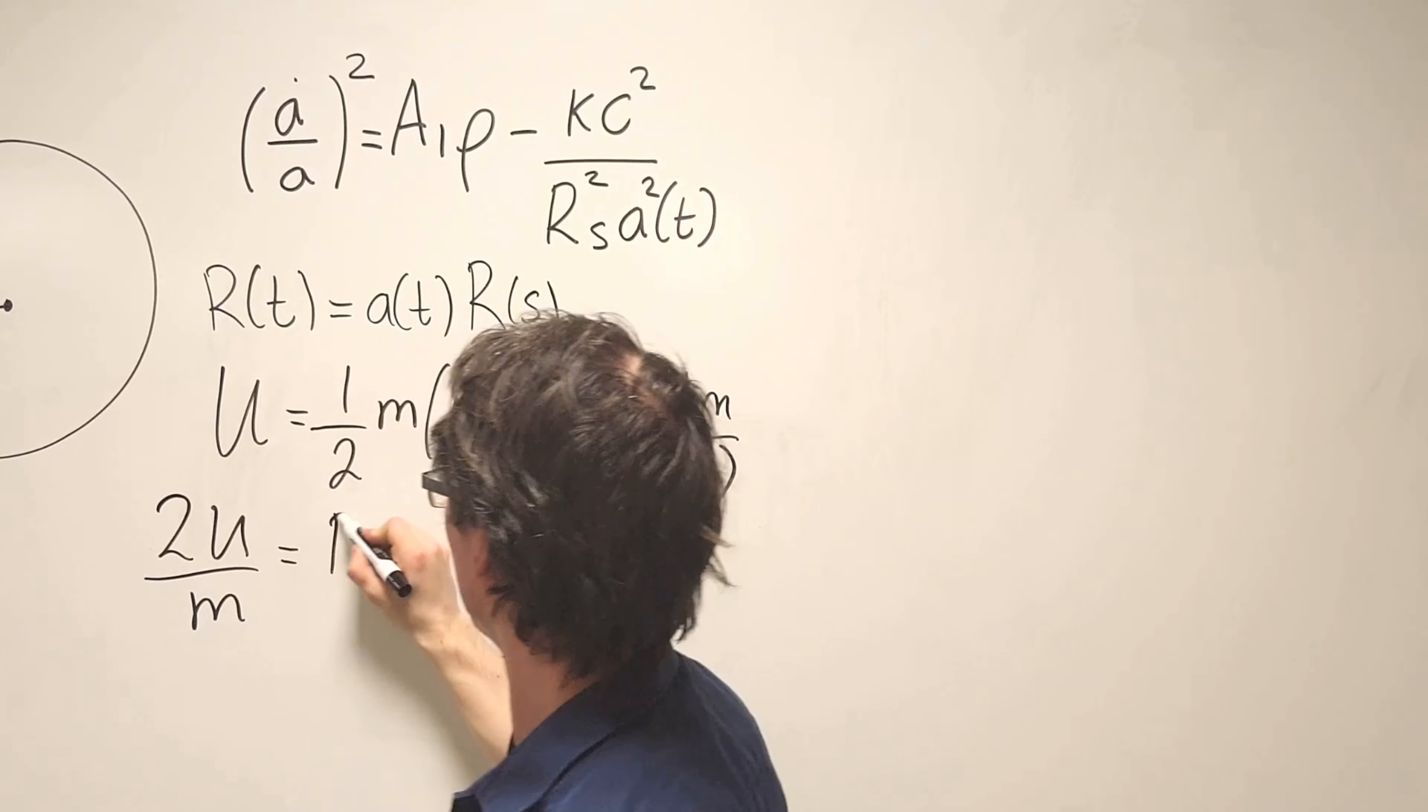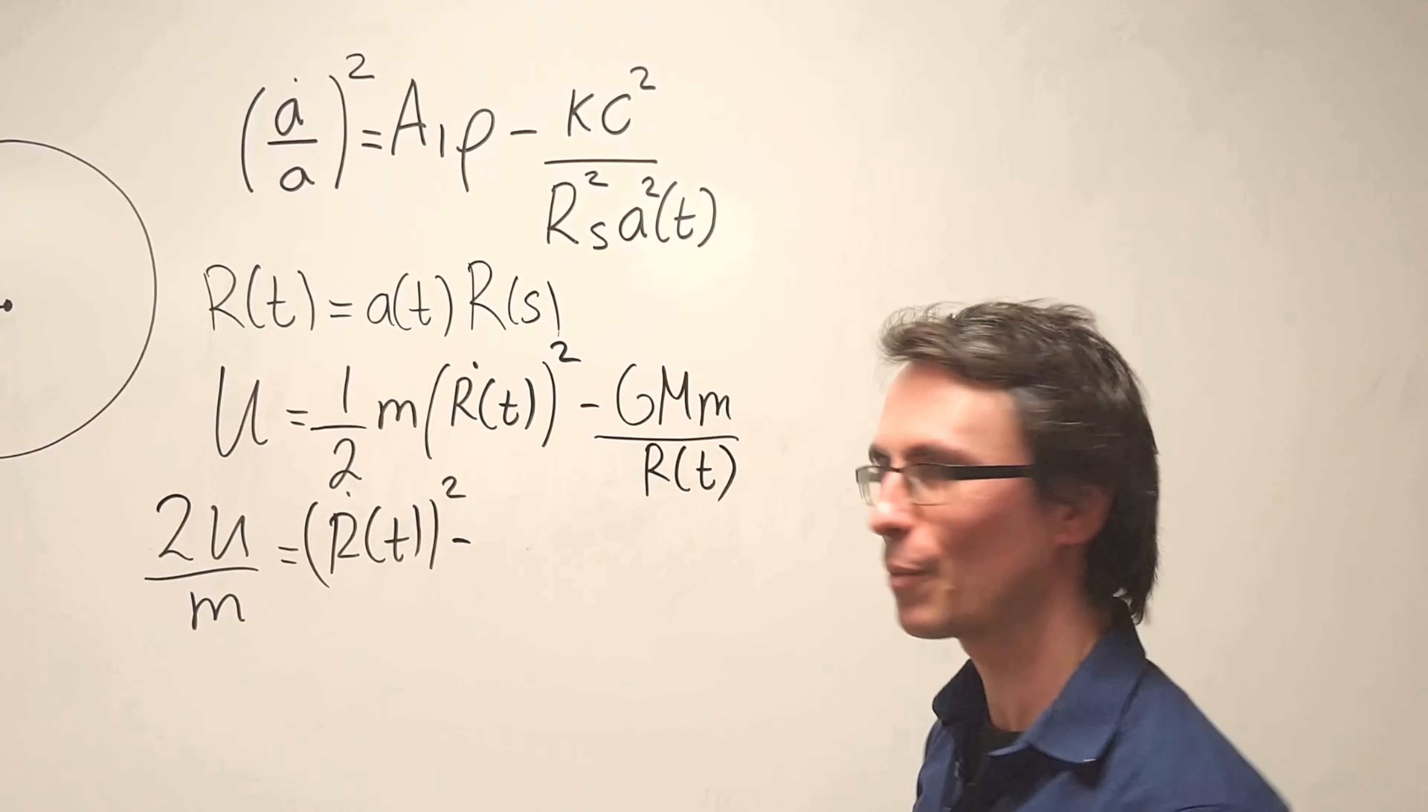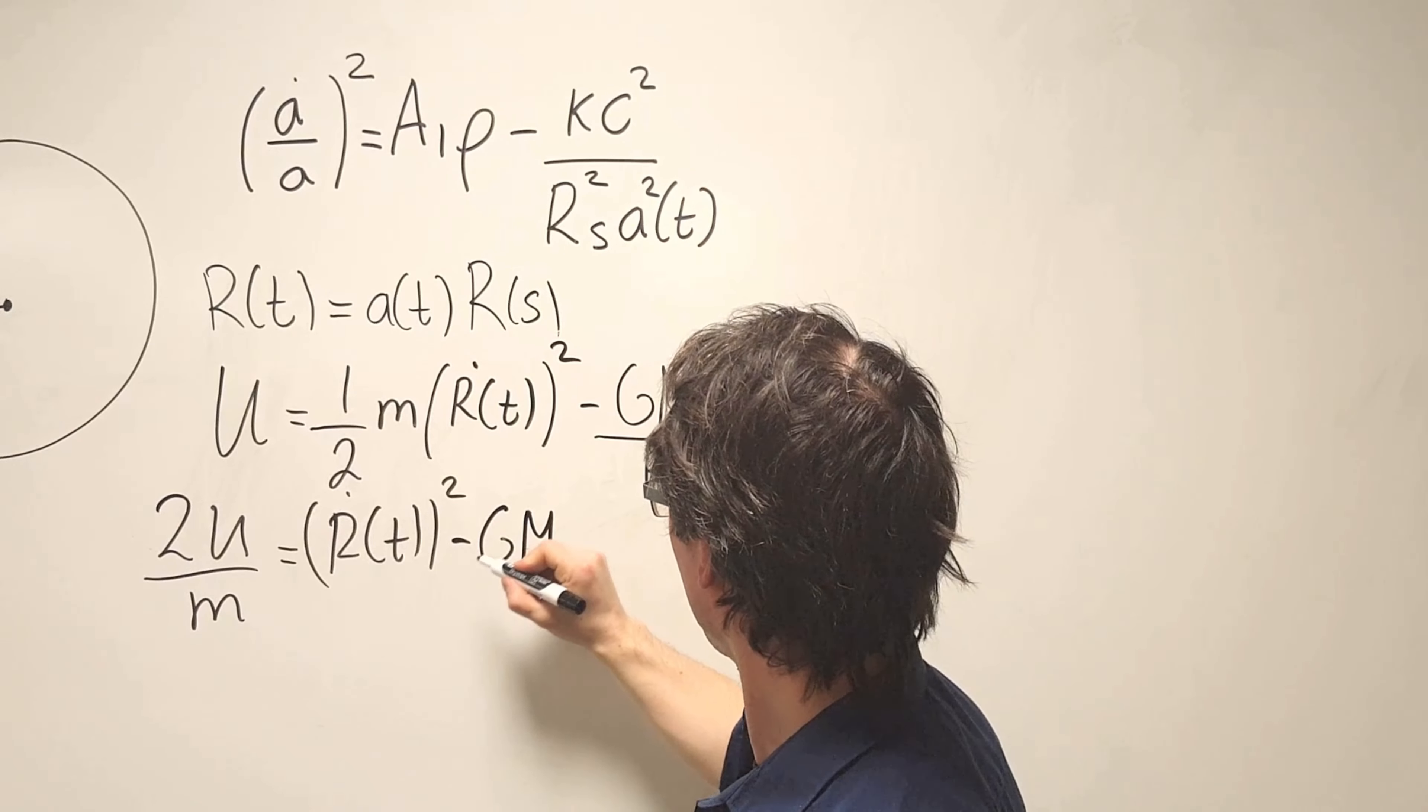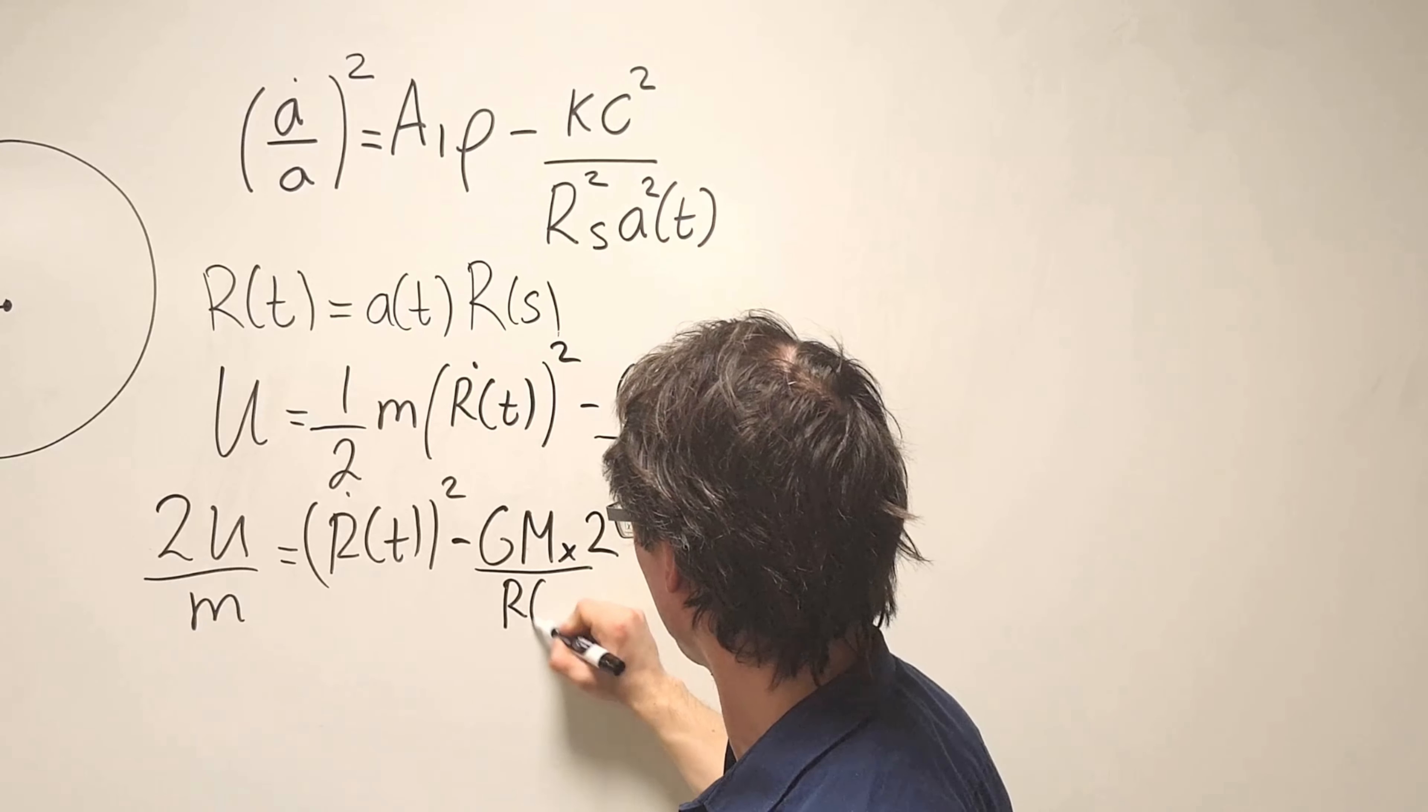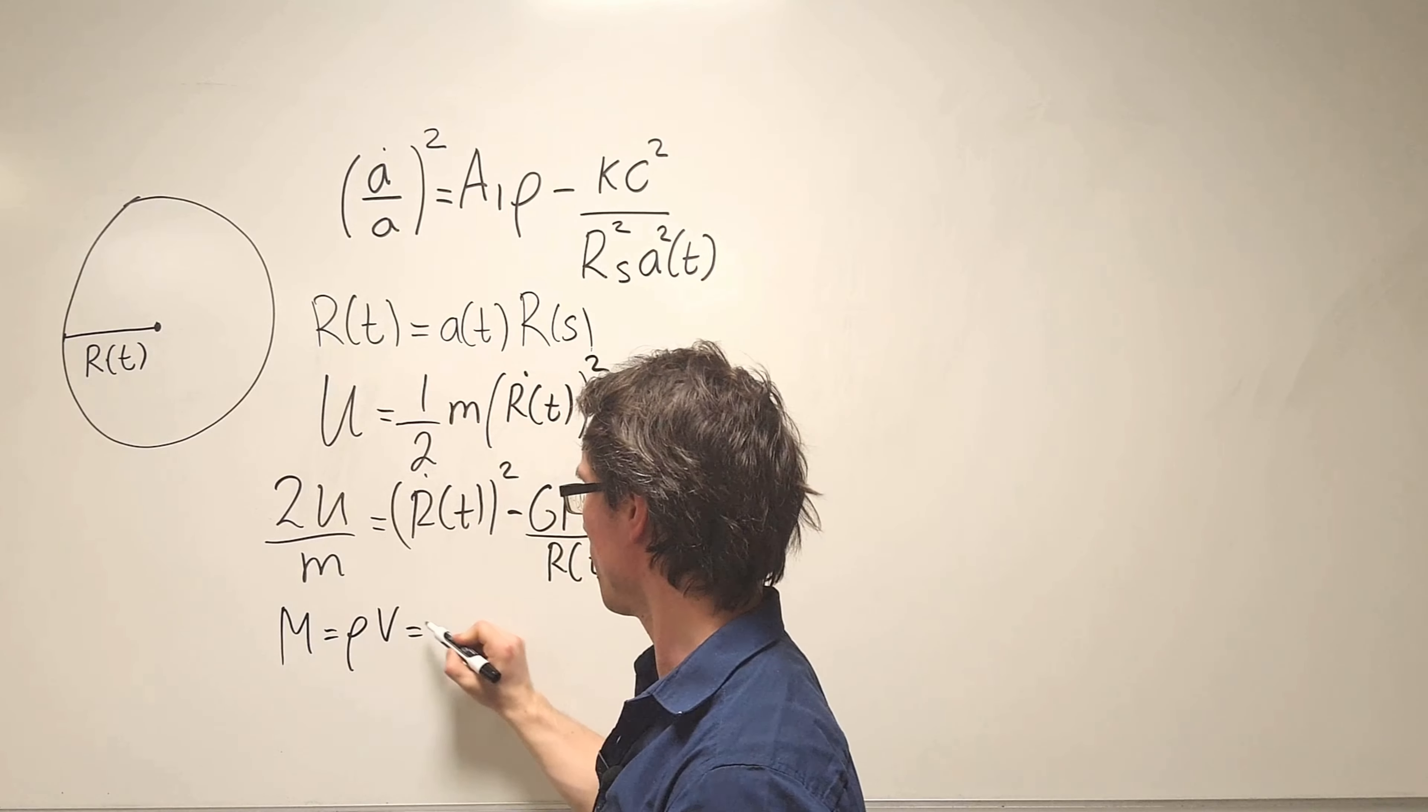So what we're going to get is 2U divided by the mass will be equal to R dot which is a function of time squared, and then we're going to take away minus GM and we're going to need a factor of 2 here, then we're dividing that by R(t).